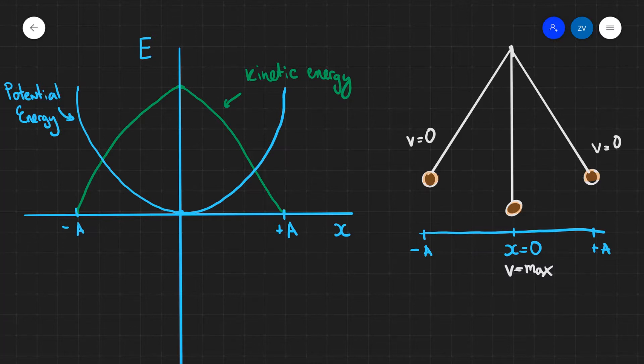Now this is represented by the kinetic energy curve on an energy against displacement graph. And this is represented in my sketch over here in green. So we can see that the kinetic energy is equal to zero at maximum displacement.